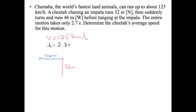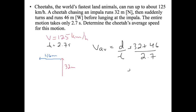We're asked to determine the cheetah's average speed. Average speed equals distance over time. Distance is 32 plus 46 divided by 2.7, which equals 78 over 2.7, giving us 28.9 meters per second. We actually didn't need the 125 km/h value to begin with.